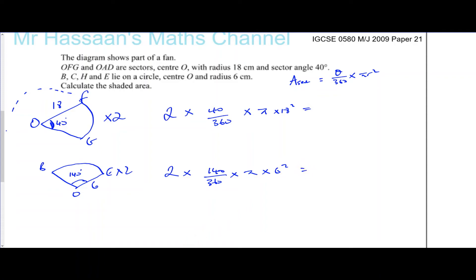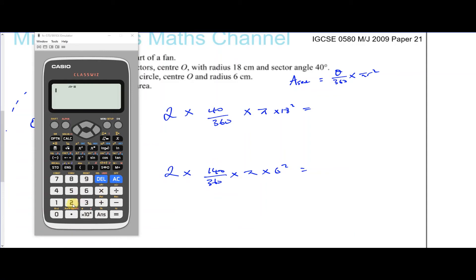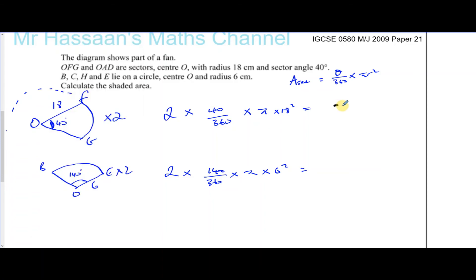We'll have 2 times 40/360 times π times 18 squared. Make sure we did everything right—that gives us 72π. I'll leave it in terms of π for now.